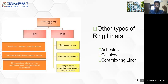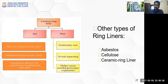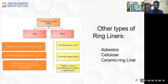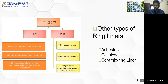When using a dry liner, it should be thick or two liners can be used together, with minimum thickness not less than 1 mm. Expansion is always more in an unrestricted longitudinal fashion. When using a wet casting ring liner, it should be uniformly wet — not more wet in one region — and you should avoid squeezing before placing it; a certain amount of water should remain to provide hygroscopic expansion. It also helps in semi-hygroscopic expansion. Types of casting ring liners include asbestos, cellulose, and ceramic ring liners, but most commonly cellulose ring liner is used.